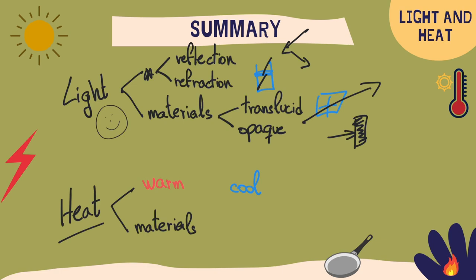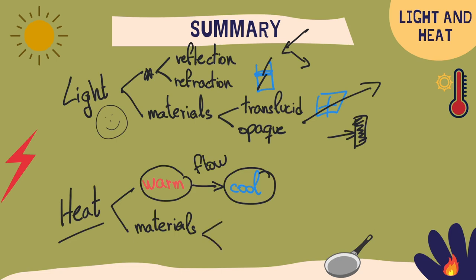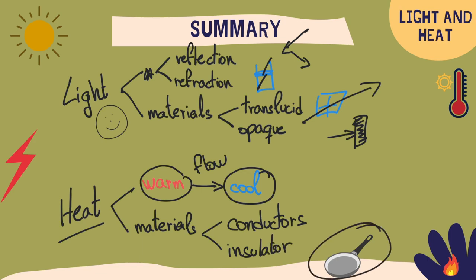Let's have a look now at heat. Heat is an energy that flows from warm to cool objects, so it is a flow of energy. Regarding materials, we have thermal conductors that make it easier for heat to transfer from one object to another, and thermal insulators. In this example, this part is the conductor and the handle is the insulator.